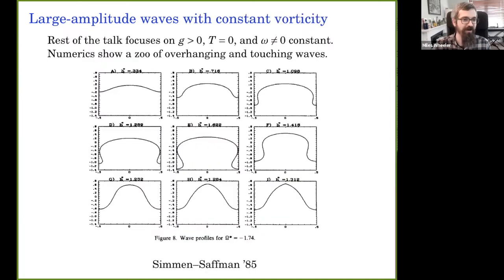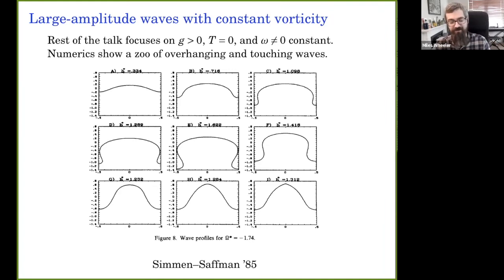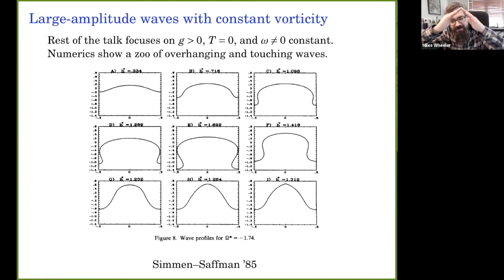Now I'll focus on the specific class of problems for the rest of the talk. We keep surface tension zero, keep gravity, and add constant vorticity — the simplest possible vorticity. This is one new parameter and the sign of this vorticity matters, making solutions look qualitatively different. Looking at the first numerics on this problem from 1985: depending on the sign of vorticity, some crests look pointy while others look really round — more like Crapper waves than Gerstner waves — and numerically you can get surfaces that are not graphs.